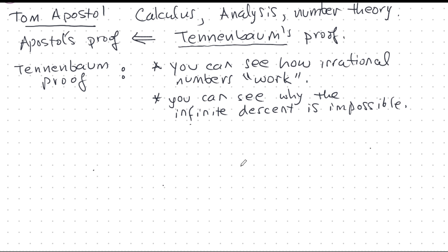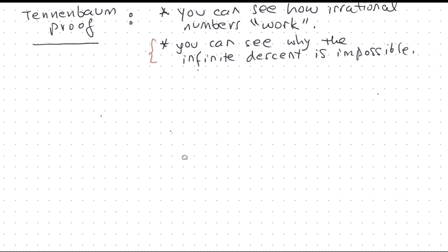In Apostol's proof it wasn't entirely clear — the proof is clear, we know it's impossible, but exactly what happens to make it impossible, well, we don't know. But in Tenenbaum's proof it becomes very, very clear. So it gives insight into the nature of proof by contradiction and infinite descent, and I'm going to explore this angle in this video. All right, let's get on with it.